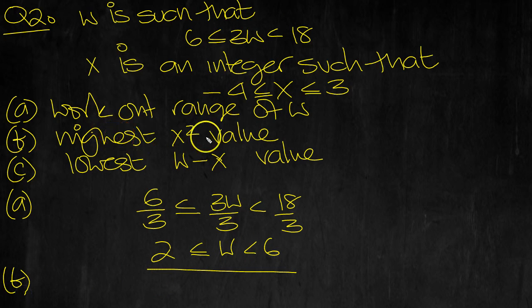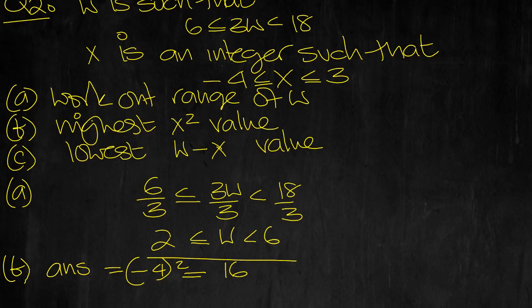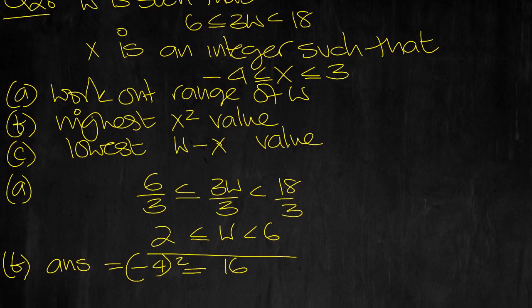Part b, the highest x squared value. x varies between minus 4 and 3. When you square x, this value would be squared. That would give 16, this would give 9. So we can see the answer is equal to minus 4 squared, isn't it, at that end rather than at the other. And that's equal to 16.